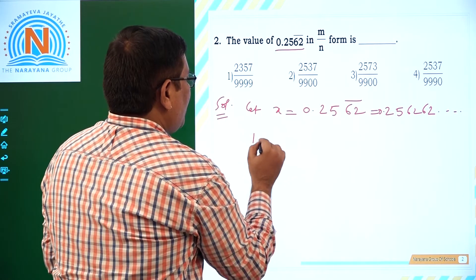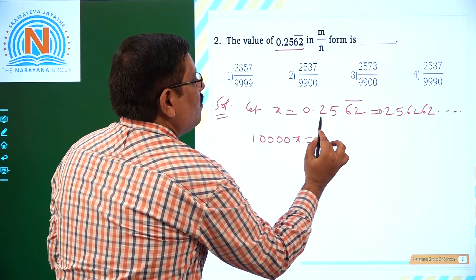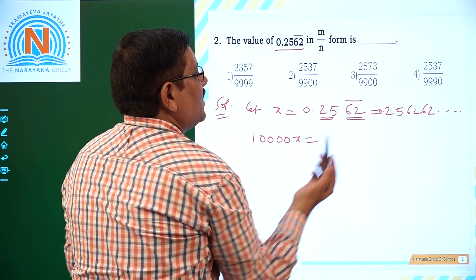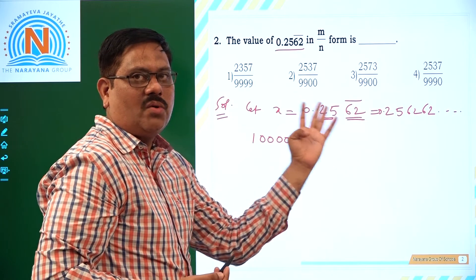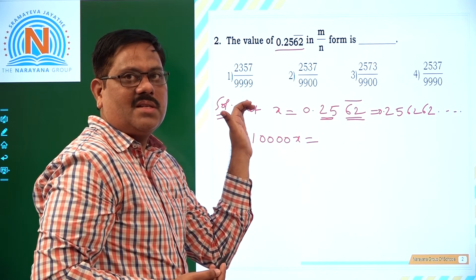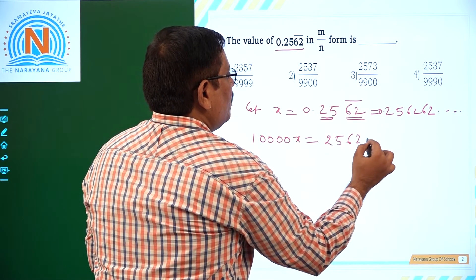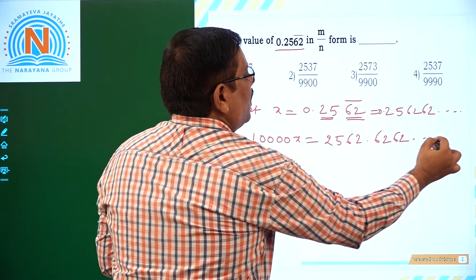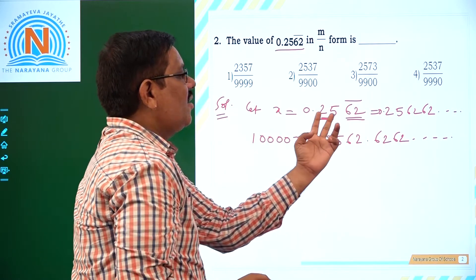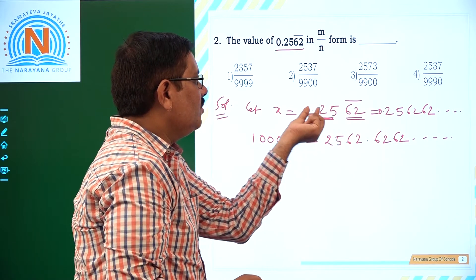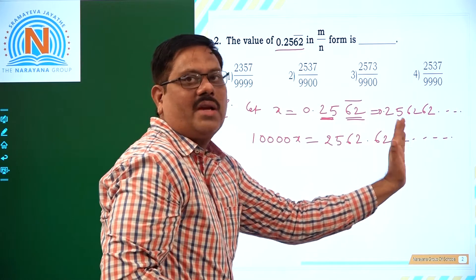In that case, first we have to multiply both the sides with 10,000. Why 10,000? Here we have 2 digits which are non-repeated and there are 2 digits which are repeating, which are recurring. So 2 plus 2, there is 4, 4 digits overall we have to send to the left of decimal. So that we have to multiply 10,000.